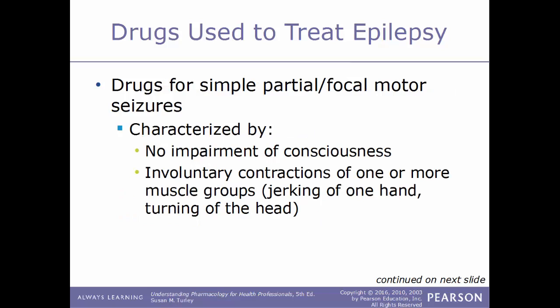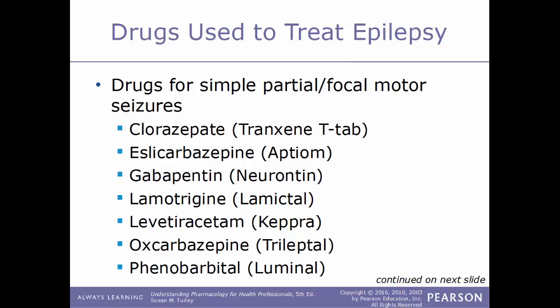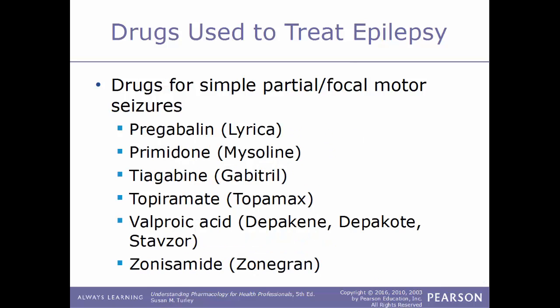Simple partial (focal motor) seizures are characterized by no impairment of consciousness but possible involuntary contractions of one or more muscle groups — turning of the head, jerking of one hand. Drugs used include clorazepate (Tranxene T-Tab), eslicarbazepine (Aptiom), gabapentin (Neurontin), lamotrigine (Lamictal), levetiracetam (Keppra), oxcarbazepine (Trileptal), phenobarbital (Luminal), pregabalin (Lyrica), primidone (Mysoline), tiagabine (Gabitril), topiramate (Topamax), valproic acid (Depakene/Depakote/Stavzor), and zonisamide (Zonegran).